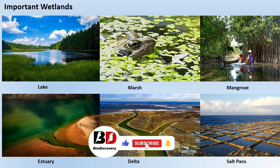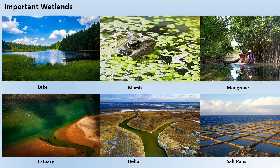A delta is an area of low, flat land shaped like a triangle where a river splits and spreads out into several branches before it enters the sea. Salt pans are shallow artificial evaporation pools designed to extract salts from seawater.